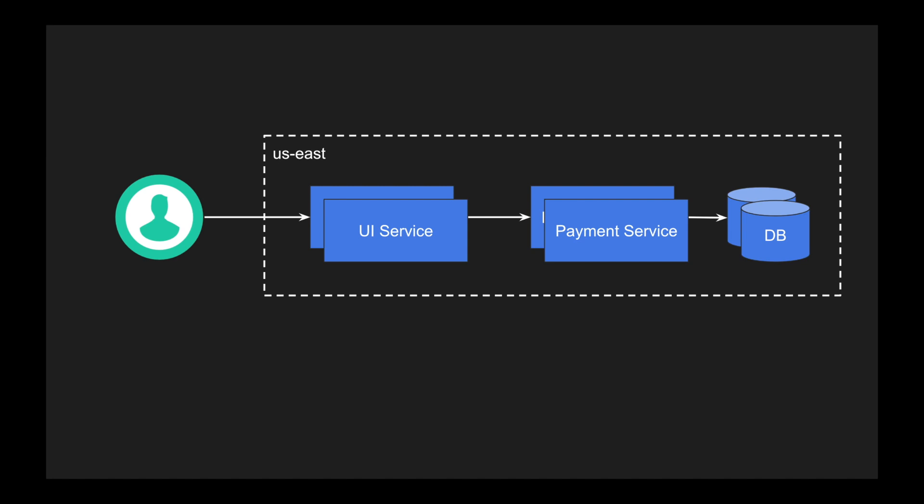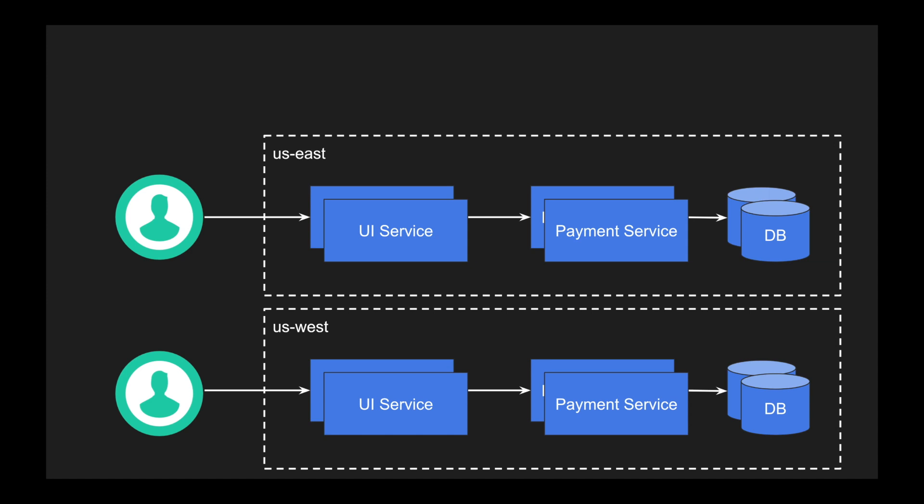Now you have more and more users from some other region as well — let's say a lot of users from US West and you want to expand your business. There will be slight latency for the US West users because they are in a different geographical location. So what we generally do is create a replication of this particular deployment into another region — US West — with a different data center there as well, deploying it to make the system highly available and serve people from both US East and US West.